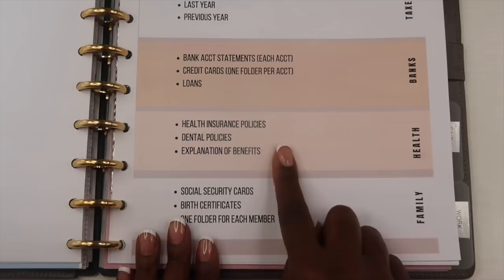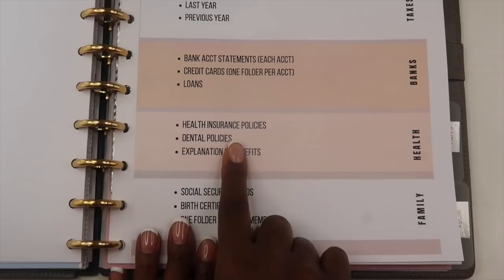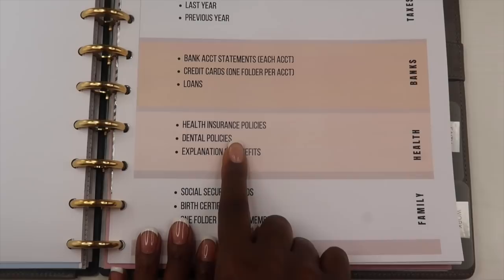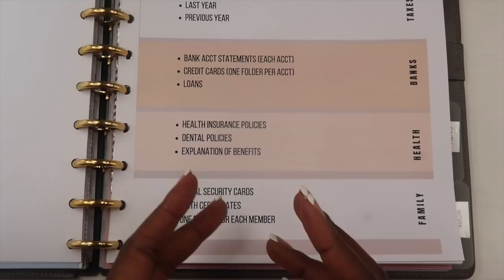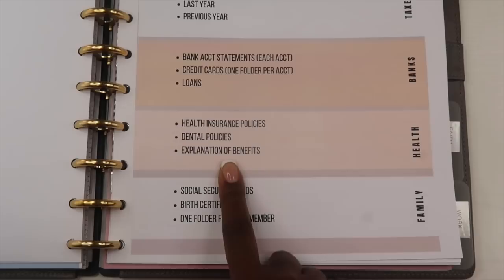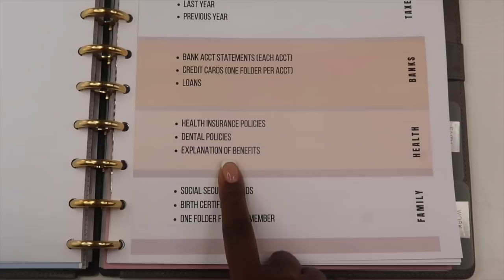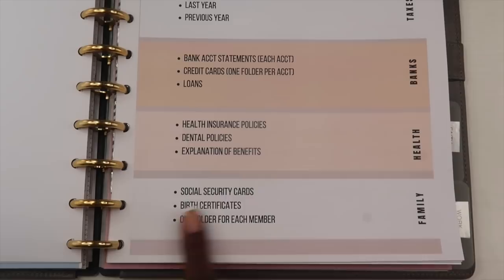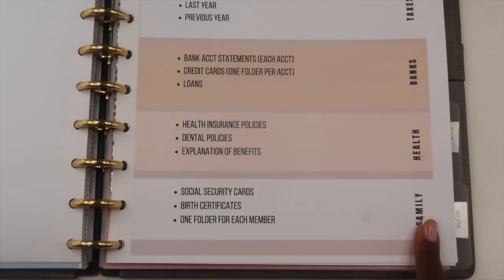The next area is our health section. In this section I have our health insurance policies, dental policies, and the explanation of benefits. We pay out of pocket for our health insurance, so every single year me and my husband evaluate our health insurance to make sure it's still working for us and pick a good policy for our family. When we get our annual policy, I keep a folder and can quickly look online for doctors to make sure they're within our plan.